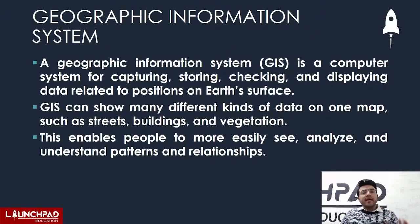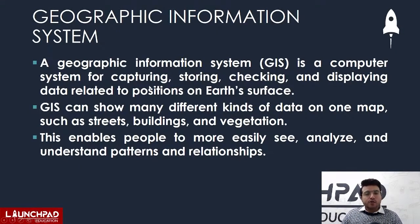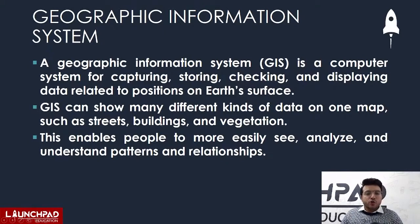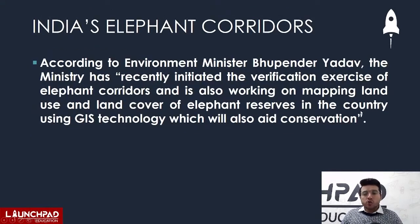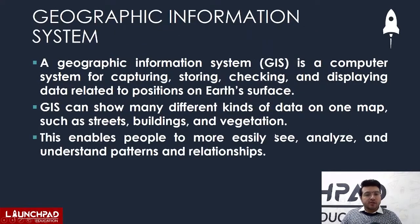This mapping will use GIS technology, which will also aid conservation. GIS — Geographic Information System — is a computer system for capturing, storing, checking and displaying data related to positions on the earth's surface. GIS can show many different kinds of data on one map, like streets, buildings, and vegetation, and we will use it to map elephant corridors and reserves.